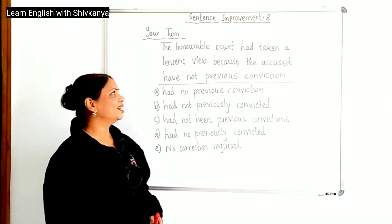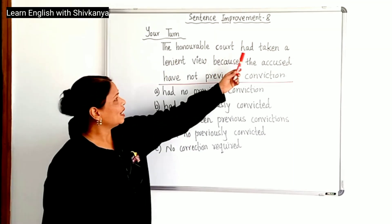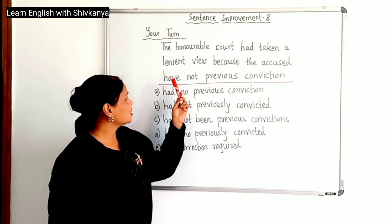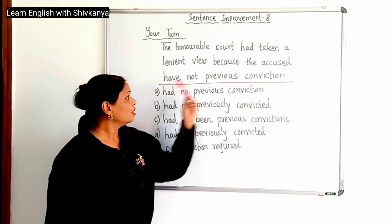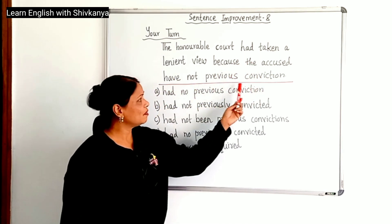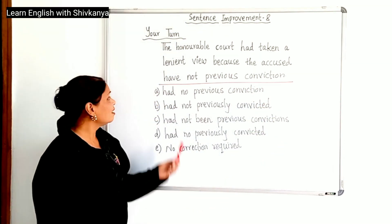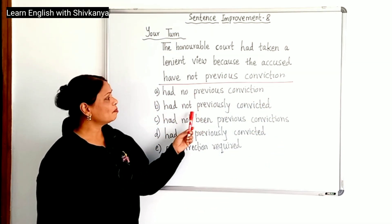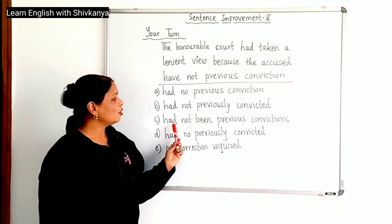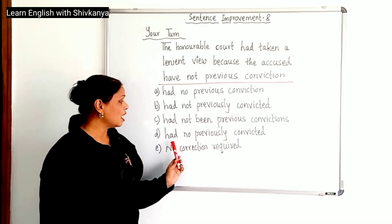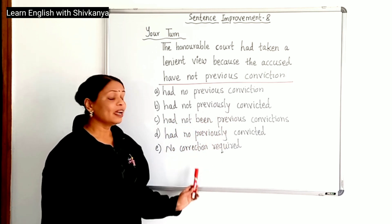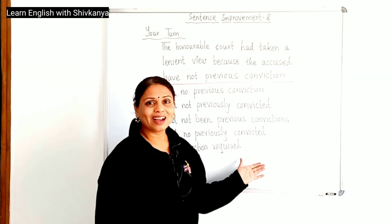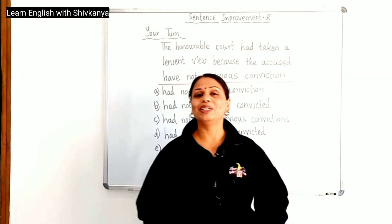Now it's your turn. The Honorable Court had taken a lenient view because the accused have not previous conviction. The wrong phrase is 'have not previous conviction,' and the options are: had no previous conviction, had not previously convicted, had not been previous convictions, had no previously convicted, and no correction required. You are going to write the answer of this question in the comment section.